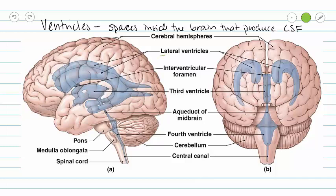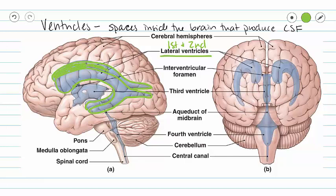We're going to begin with our lateral ventricles, which can be labeled as our first and second ventricles. Our lateral ventricles are these crazy-shaped structures — there is the left lateral ventricle, but we have one on each side of our head. Looking at the anterior view of our brain, we can see our lateral ventricles on each side, so these are ventricles one and two.